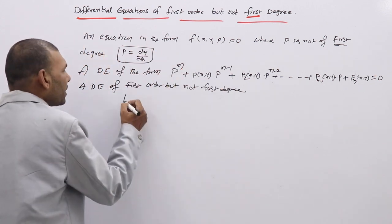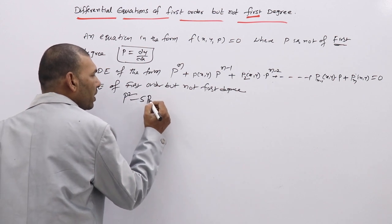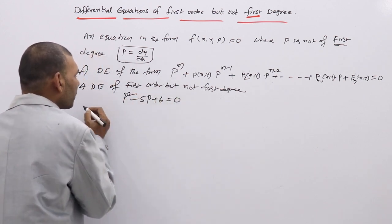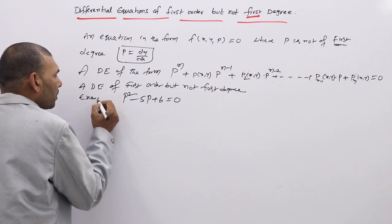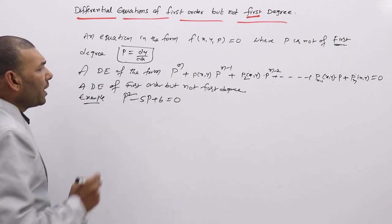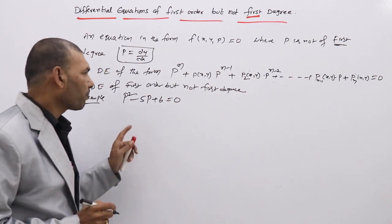For example, you will have an equation like: p² - 5p + 6 = 0. This is an example of a DE of first order but not first degree.